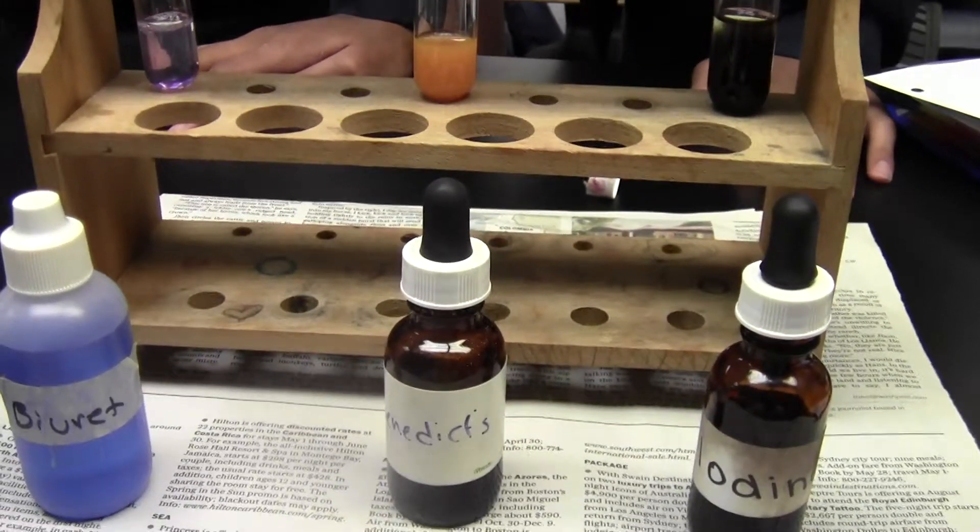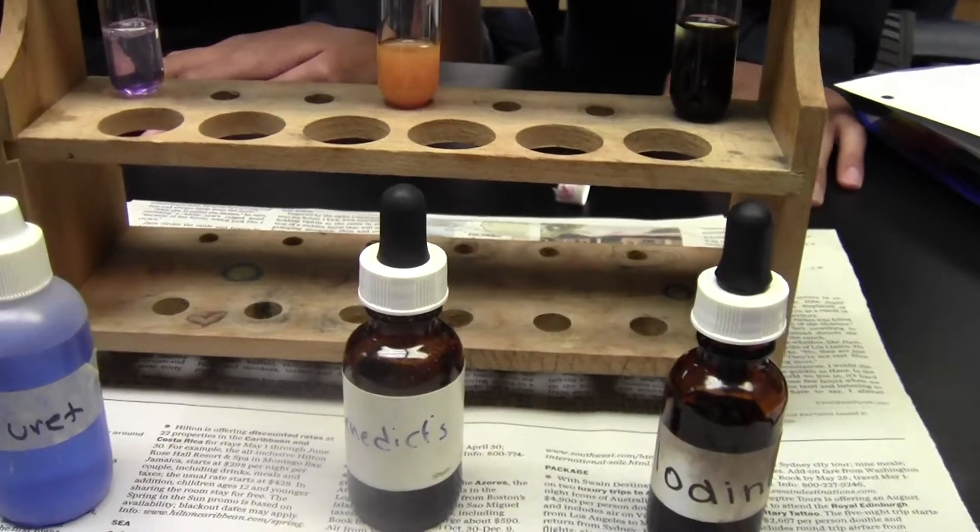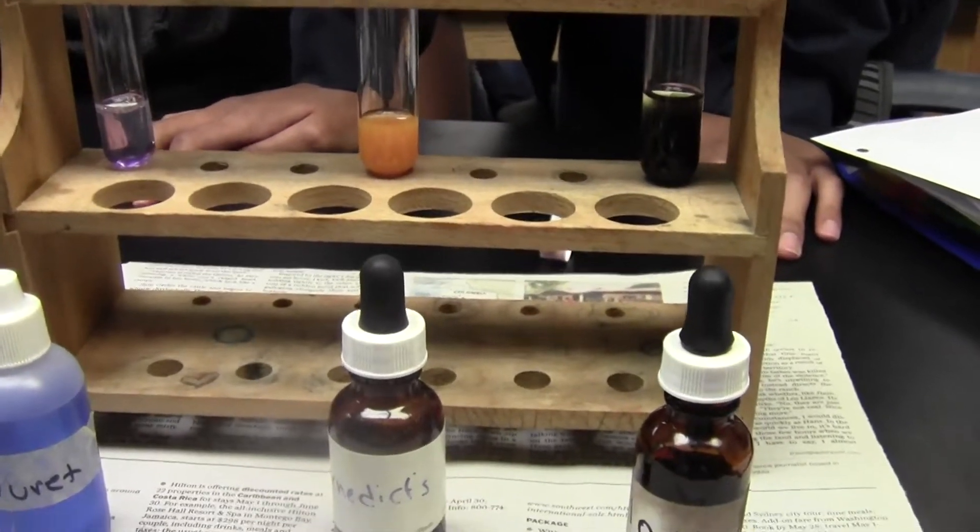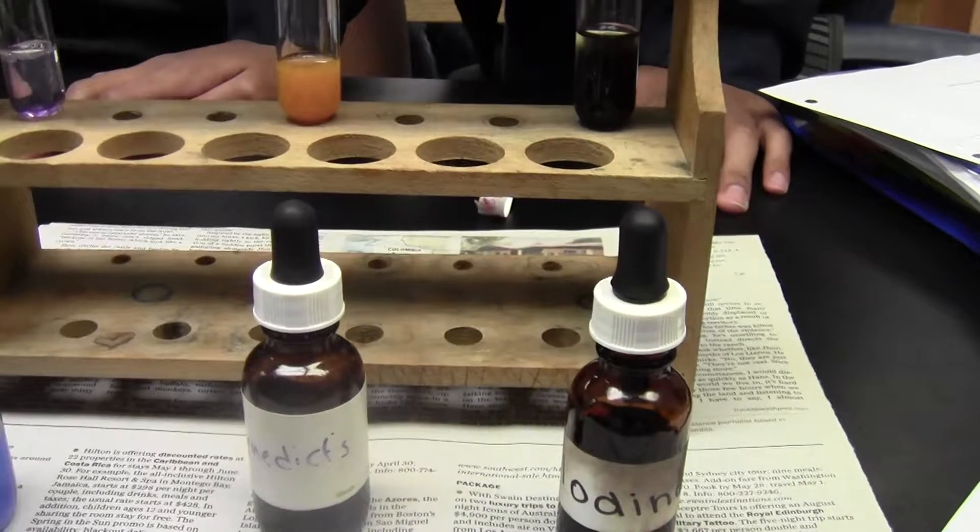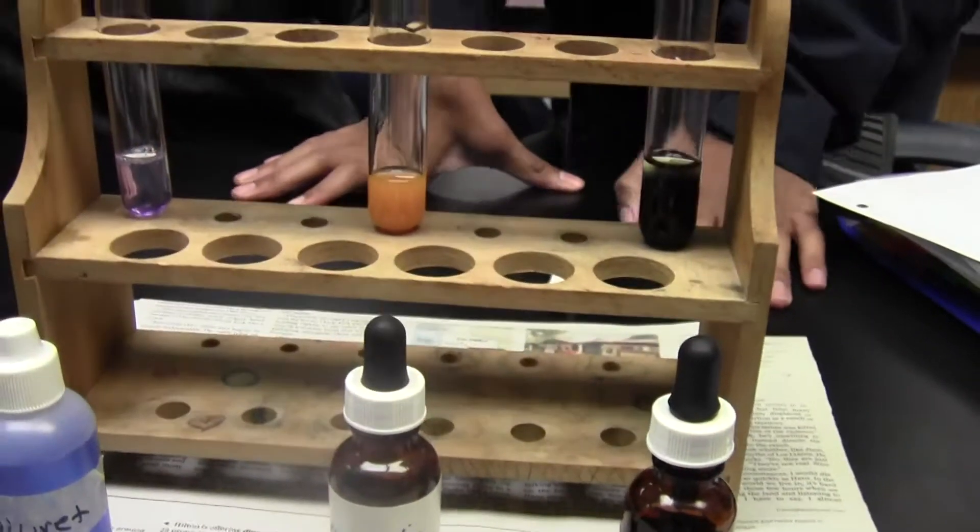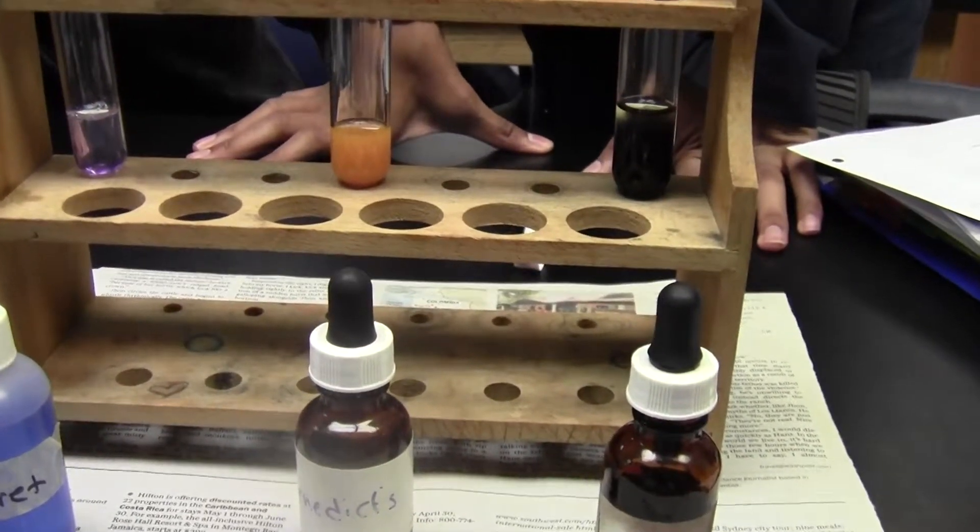Next week, you're going to have to apply this to an unknown lab where it's going to say A, B, and C. You're going to have to do the starch, glucose, and protein tests on all three samples. After you do clean up, start talking about how you're going to plan that out.